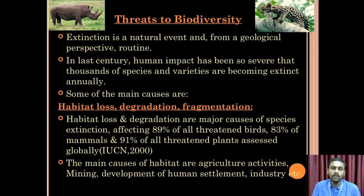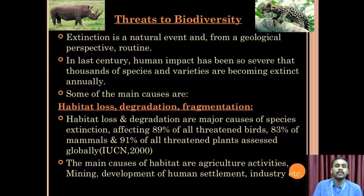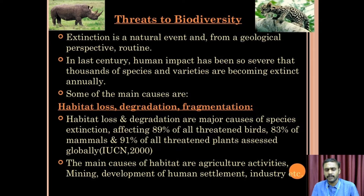According to the IUCN report of 2000, the main causes of habitat loss for plants and animals are agricultural activity, mining, and development of human settlements.